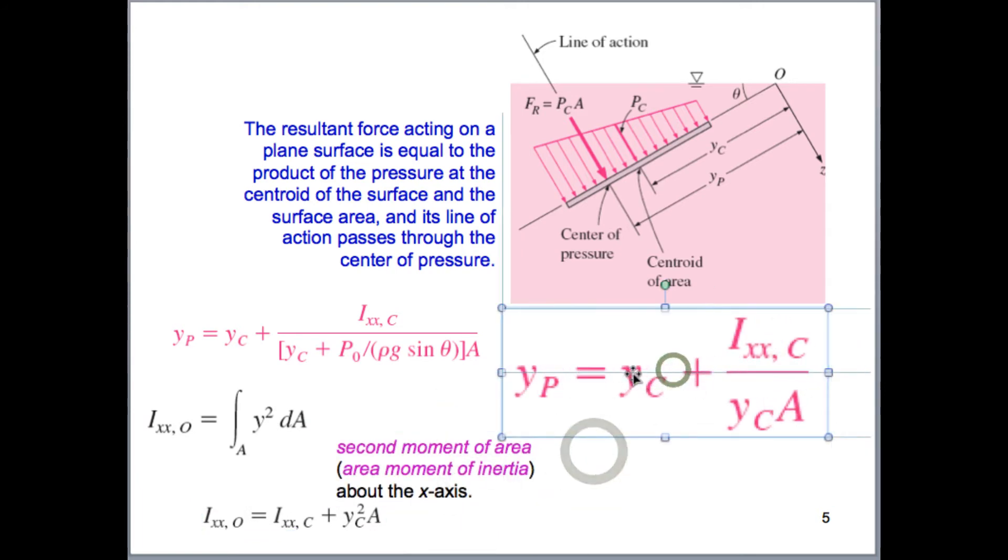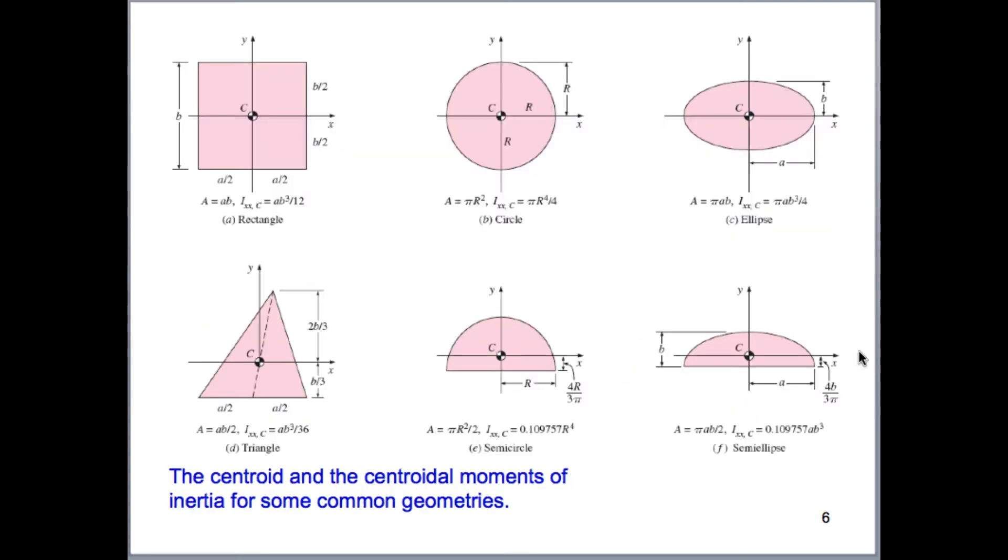y sub c plus a little bit. This term is the moment of inertia. And this is going to depend on the geometry that we're dealing with. That is divided by y sub c times area. If you're interested in where this formula comes from, you can check your text and it gives you a description of how they came about this derivation.